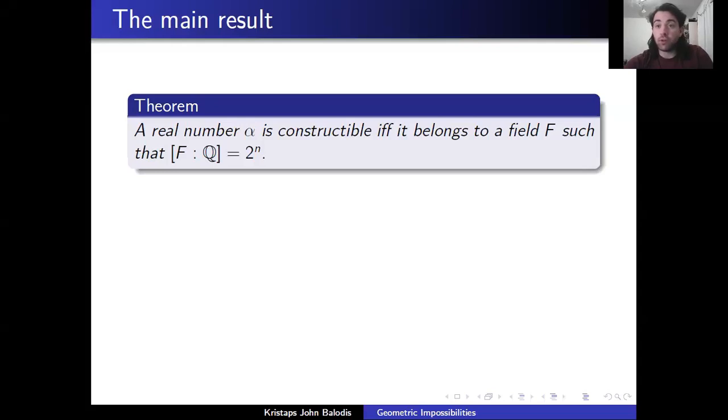So here we are in the final video and the ultimate theorem. The result is that a real number is constructible if and only if it belongs to a field which has degree 2 to the power of n as an extension over the rational numbers.